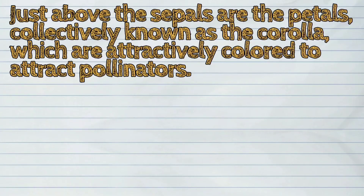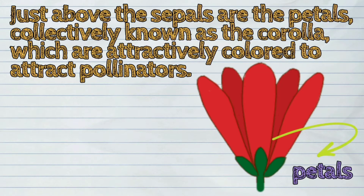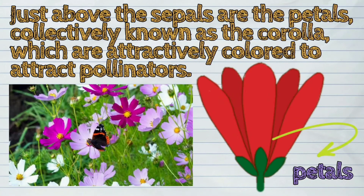Just above the sepals are the petals, collectively known as the corolla, which are attractively colored to attract pollinators.